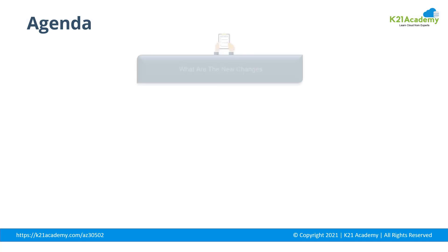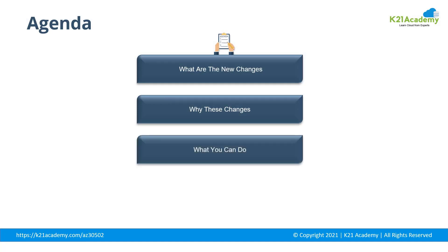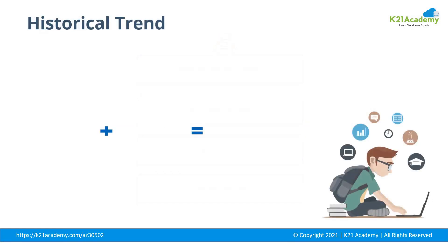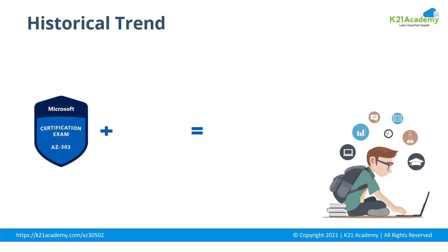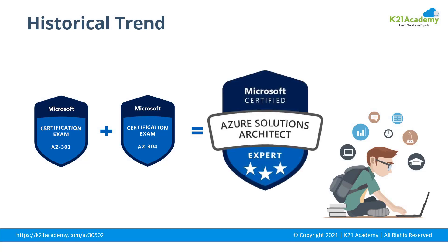Let us first discuss the agenda for today. We will be discussing what are the new changes, why these changes were made, and what you can do. Looking at the historical trends, you had to clear two exams to get the expert badge: AZ-303 and AZ-304. After clearing both of these exams, you would receive the expert badge or certification.